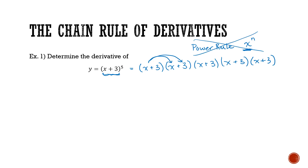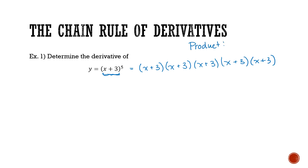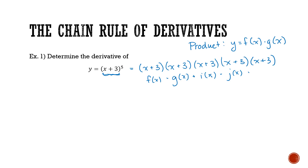We don't want to do that because it's very time consuming and tedious. We've also learned about the product rule, which applies when y is in the form of f(x) times g(x). In this case, we've got an f(x) times g(x), but then we also have i(x), j(x), k(x) — there are just a lot of these. To apply the product rule you technically could do it, but it would be very tedious and error prone. So we're not going to do that either.